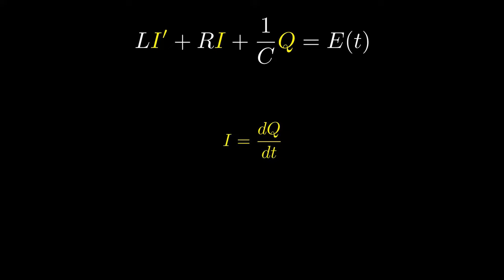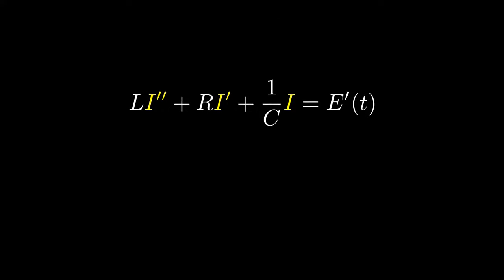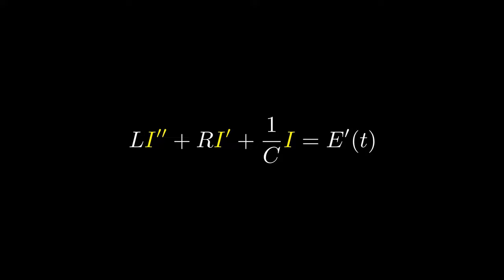And, to make everything in terms of I, what we can do is take the derivative on both sides. So that will give us L times the second derivative of I plus R times the first derivative of I plus 1 over C is equal to E prime of T. This is a main circuit equation that I'll be using for the rest of this chapter, and it would be a good idea to write it down.